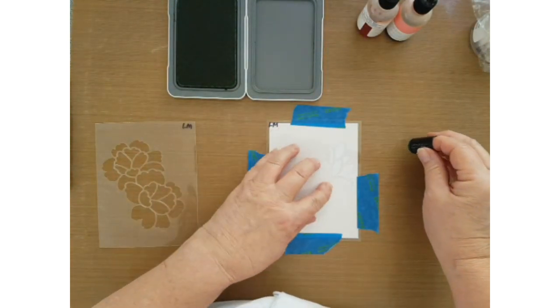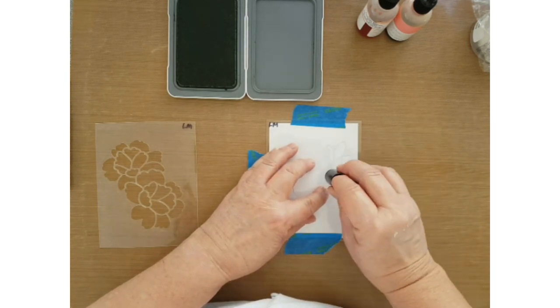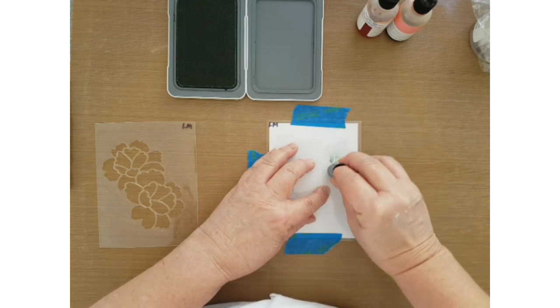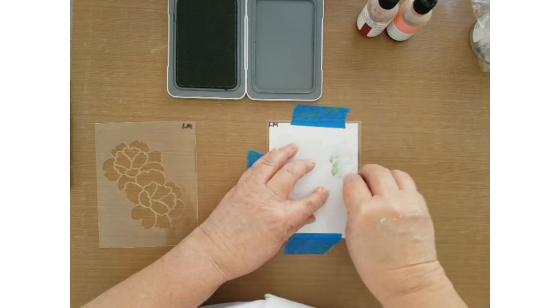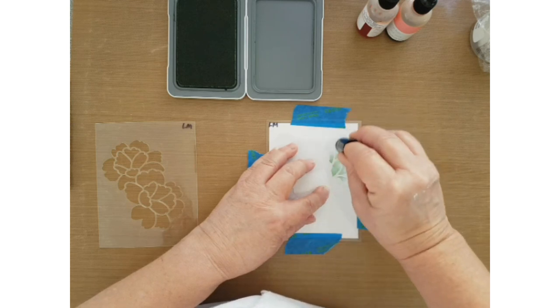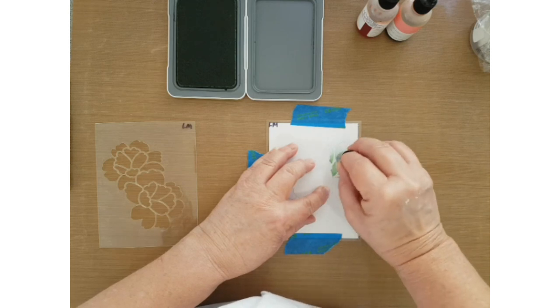I'm using sage ink and I'm just giving more color to the base, flicking out the sponge dauber to give a bit of variety and shading.